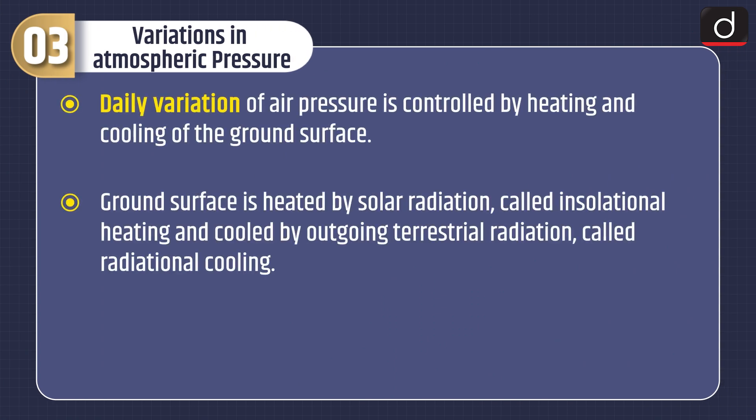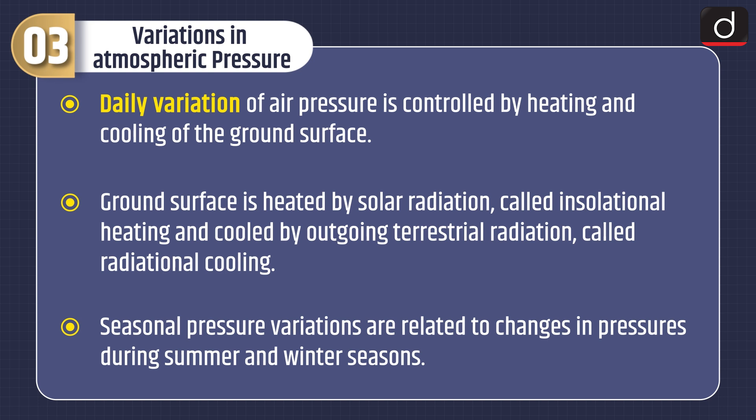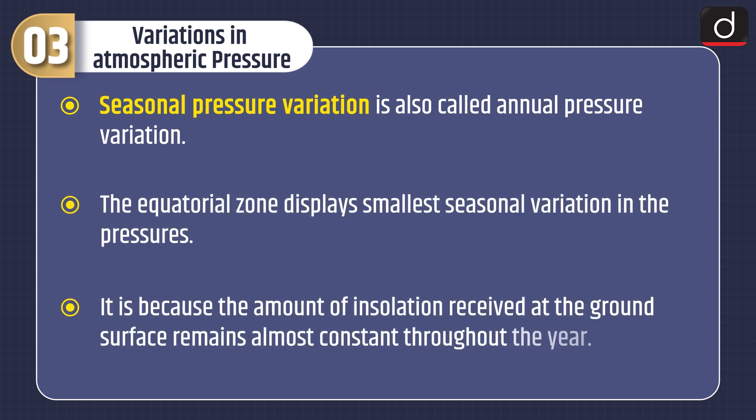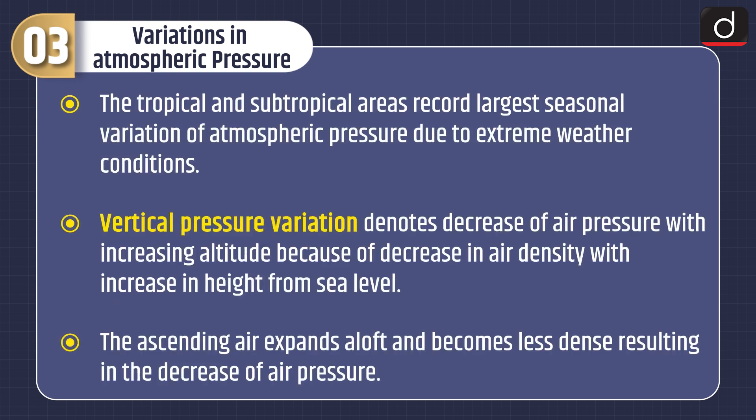Variations in atmospheric pressure: Daily variation of air pressure is controlled by heating or cooling of the ground surface — insolational heating by solar radiation and radiational cooling by outgoing terrestrial radiation. Seasonal pressure variations relate to changes during summer and winter, also called annual pressure variation. The equatorial zone displays the smallest seasonal variation because insolation remains almost constant throughout the year. Tropical and subtropical areas record the largest seasonal variation due to extreme weather conditions. Vertical pressure variation denotes decrease of air pressure with increasing altitude due to decrease in air density, as ascending air expands aloft and becomes less dense.